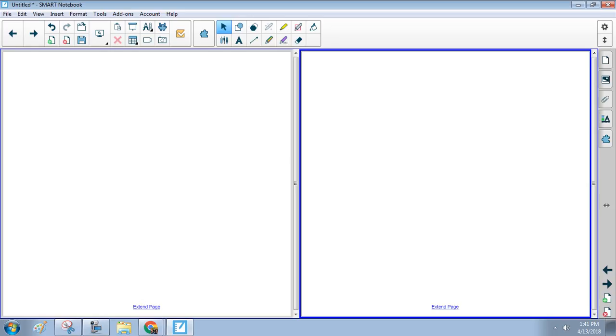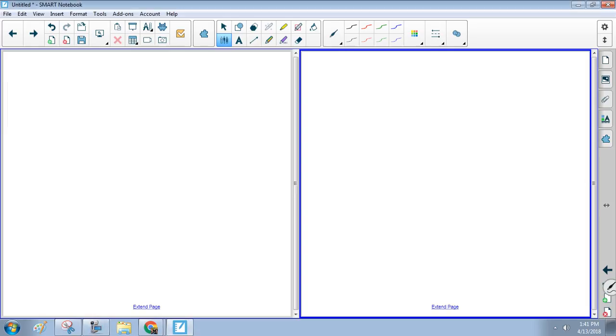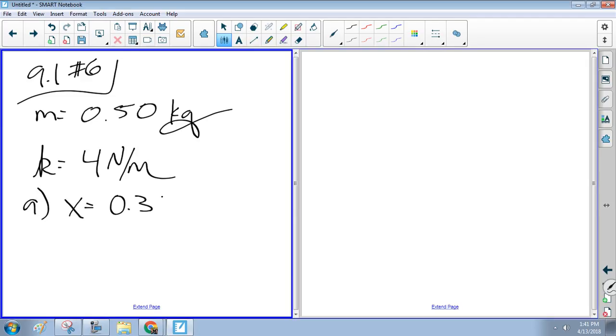In number six, it says suppose a 0.5 kilogram cart. What am I doing? Am I recording? I am. Good. Alright, here we go. 9.1, number six. Mass is 0.5 kilograms worth of cart. It says it's set up on a horizontal frictionless track between two springs, each with a spring constant of four newtons per meter. Part a says if we pull the cart back 0.30 meters and release it, what is the period?